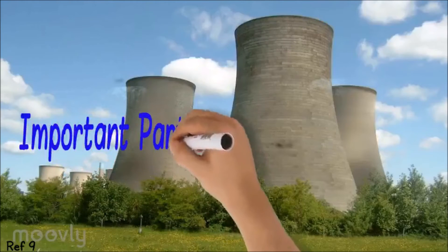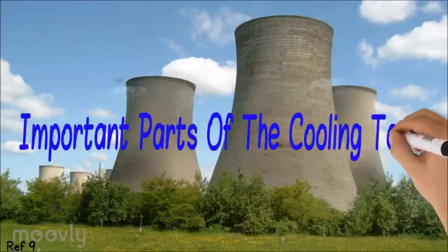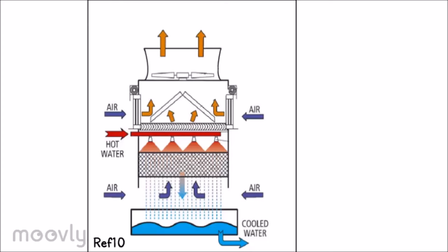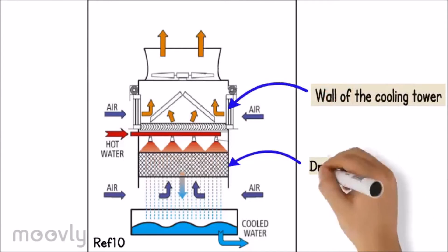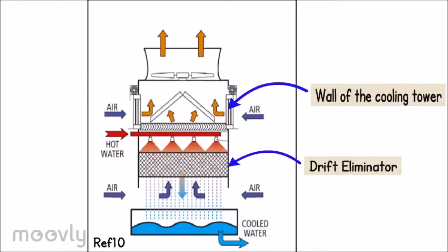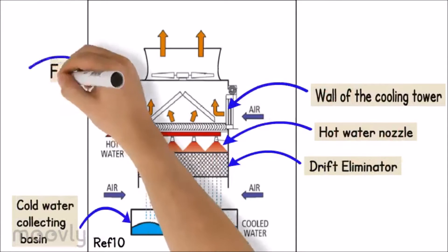Let's take a look at the important parts of the cooling tower. The cooling tower consists of a structural wall, drift eliminator, tower packing, hot water nozzle, cold water collecting basin, and fan.